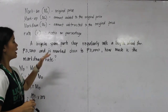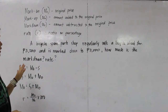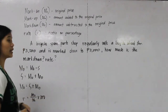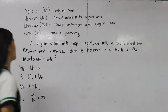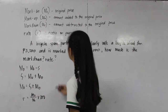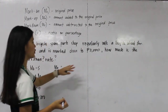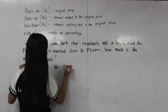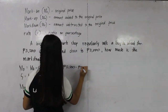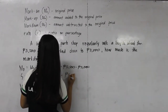Next example: a bicycle spare parts shop regularly sells bicycle wheels for 5,500 pesos and marks them down to 5,000 pesos. How much is the markdown and the markdown rate? Markdown has the formula of original price minus the selling price. So markdown equals 5,500 pesos minus 5,000 pesos.